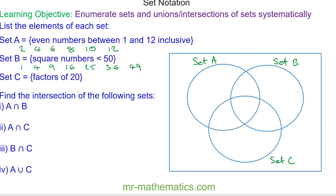And the factors of 20 are 1, 2, 4, 5, 10, and 20.